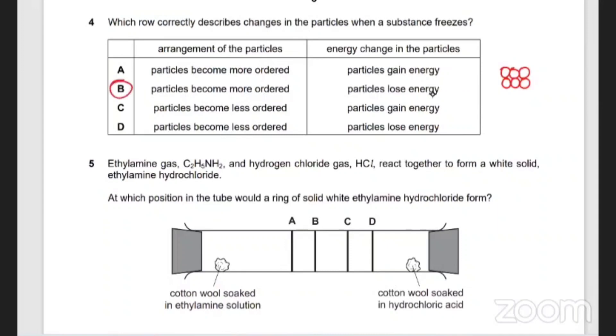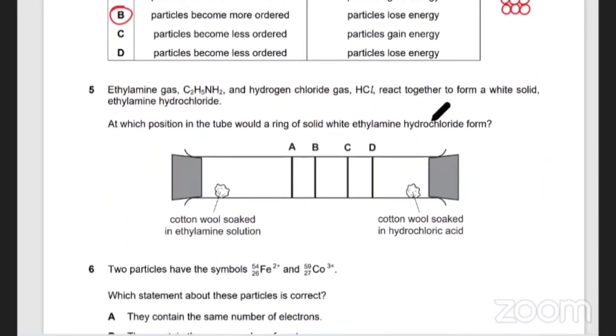That's why they become more ordered, because they can't move around, so they don't have a lot of energy. So B. Let's move on.